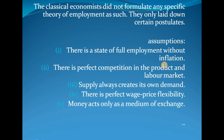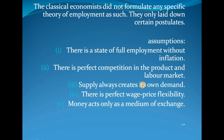Assumption two: there is perfect competition in the product and labor market. Perfect competition means buyers and sellers have perfect information about market conditions — they know costs and prices so no one can cheat each other, and there are large numbers of sellers and buyers with no monopoly or monopolistic competition. The product market is where goods are sold and the labor market is where workers render their services and receive wages.